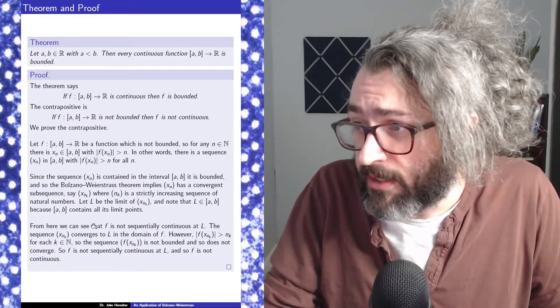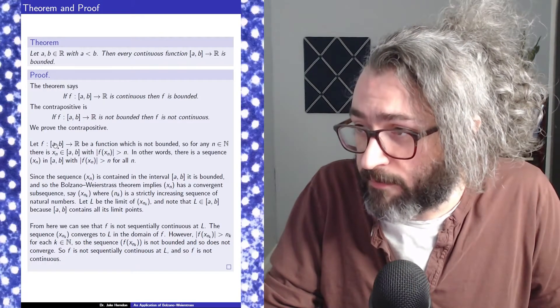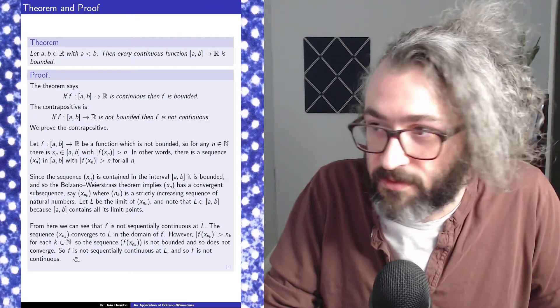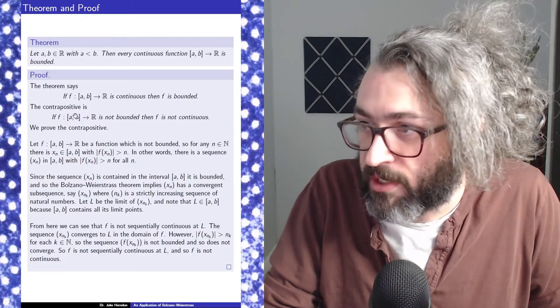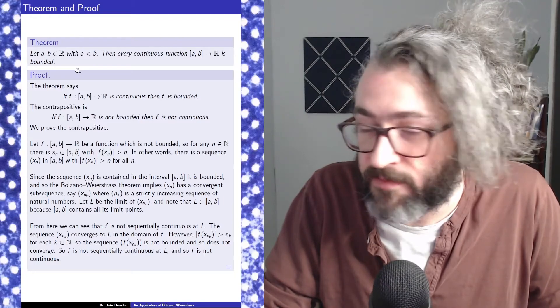So that's the end of the proof. If you look at these three paragraphs, they start with, let f be a function which is not bounded. And it ends with, so f is not continuous. And that is the contrapositive of the theorem. So we're done. We proved the contrapositive, so we proved the theorem.